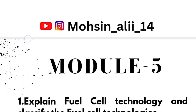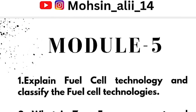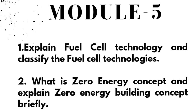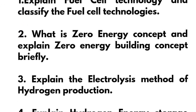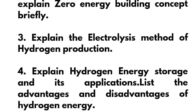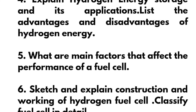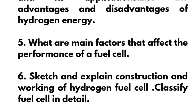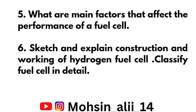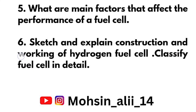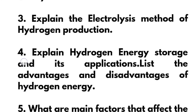Make sure you go through these important questions — not only to pass, you can score as well. In Module 5: expand fuel cell technology and classify fuel cell technologies; explain the zero energy concept and zero energy building concept briefly; explain the electrolysis method of hydrogen production; explain hydrogen energy storage and its applications; list the advantages and disadvantages of hydrogen energy; explain the main factors that affect the performance of a fuel cell; sketch and explain the construction and working of a hydrogen fuel cell; and classify fuel cells in detail.